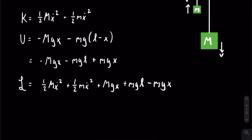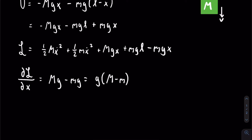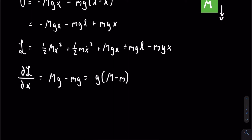Remember that the Lagrangian is the difference between the kinetic and potential energies. The first derivative we take is the partial of the Lagrangian with respect to x. There is no x in the first, second, or fourth term, so we focus on the other two terms. We get that the partial of the Lagrangian with respect to x is equal to capital M g minus lowercase m g, which is just equal to g times the quantity capital M minus lowercase m.